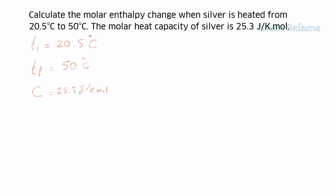As mentioned in the previous video, we should convert the temperatures to Kelvin. The formula to convert from Celsius to Kelvin is: T(K) = T(°C) + 273.15. In some books they just add 273. So we add 273.15 to the initial temperature — the answer is 293.65 Kelvin.